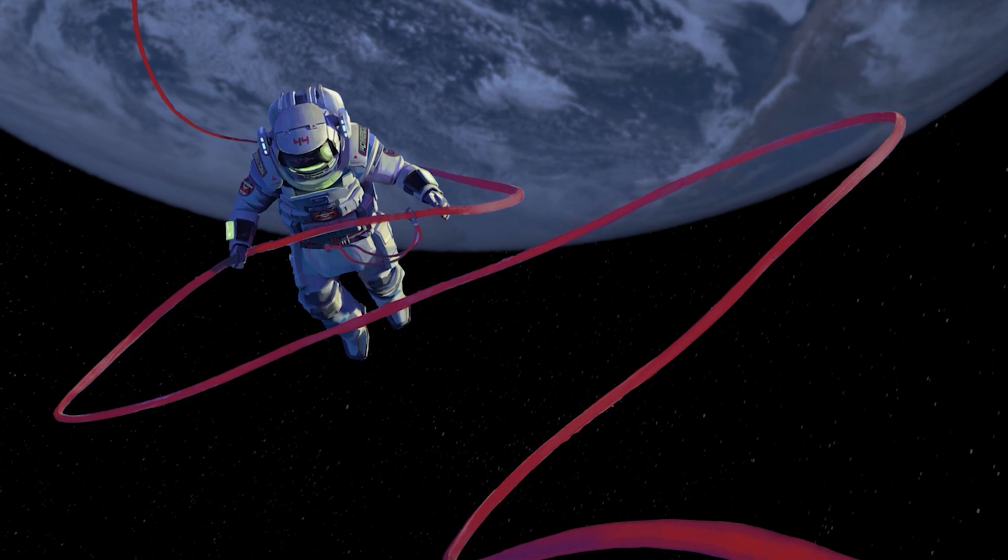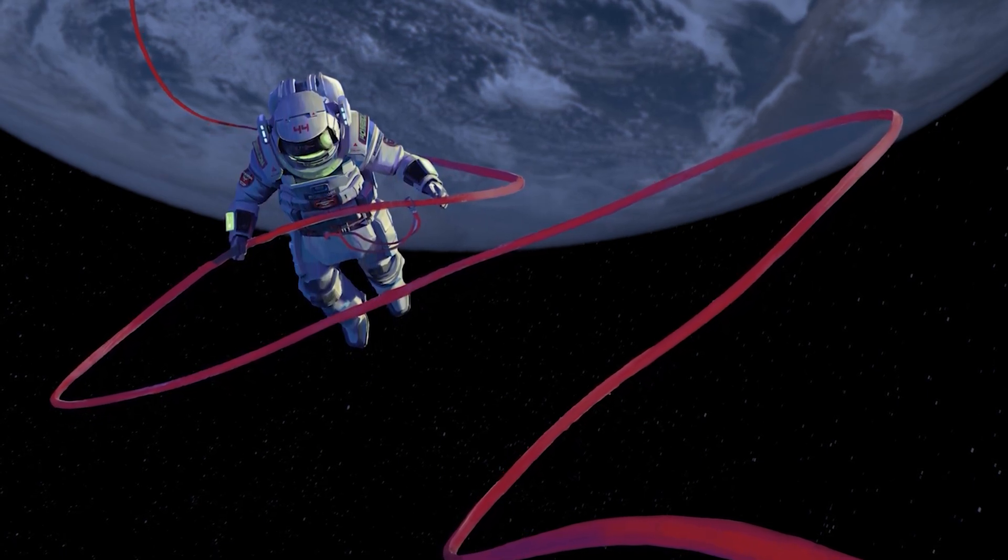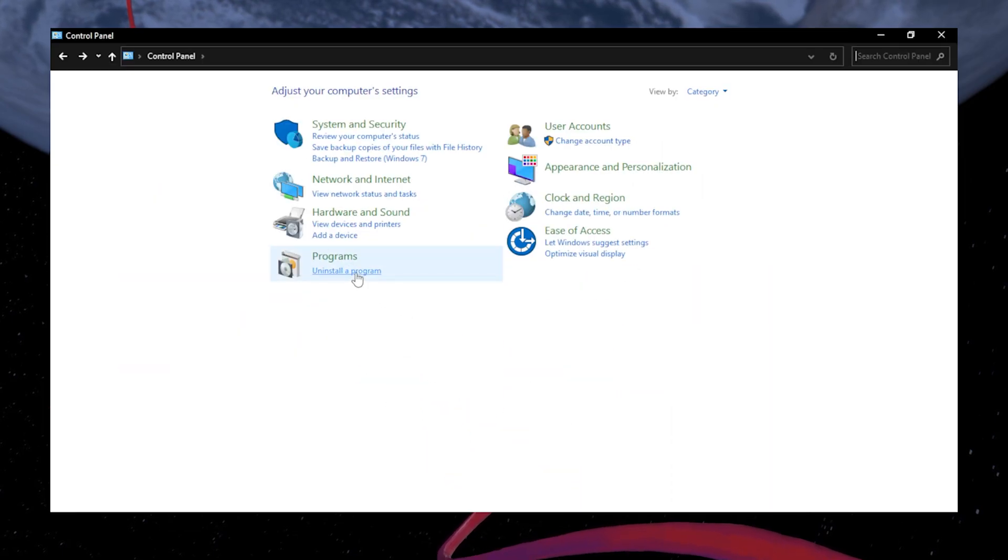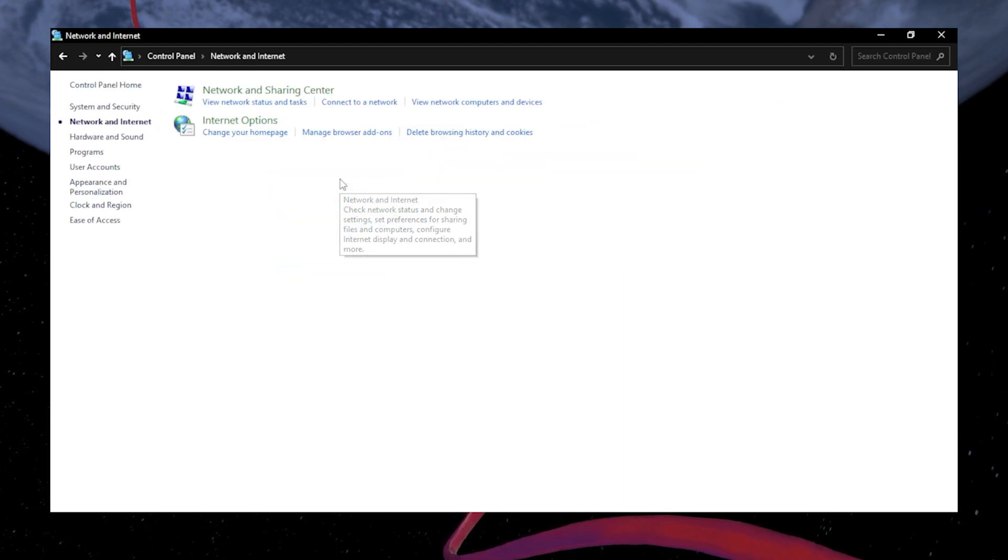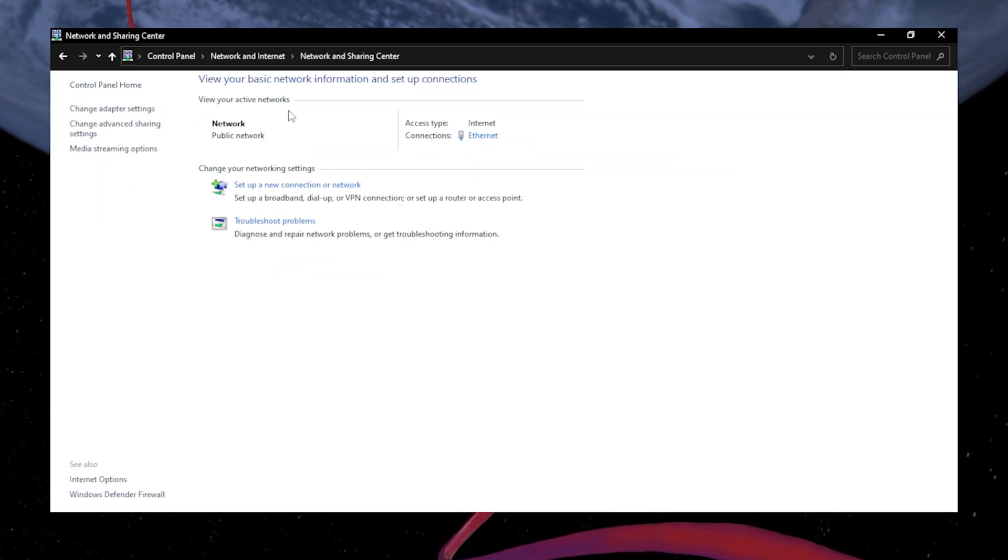You might encounter different connection errors using some applications if there are issues with the default DNS server on your PC. Go to the Control Panel, navigate to the Network and Internet category. On this page, click on Network and Sharing Center.